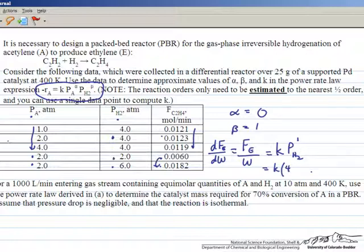Taking one data point, the partial pressure of hydrogen is 4 atmospheres, the outlet flow rate of ethylene is 0.0121 moles per minute, and the catalyst mass in the reactor is 25 grams.